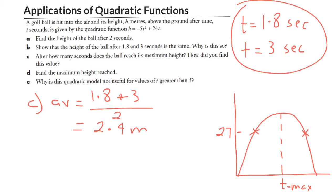So our answer there is, for part c, is we're taking the average of 1.8 seconds and 3 seconds. Because those two values produce the same height. It wouldn't matter what those heights were.